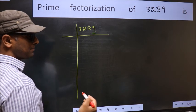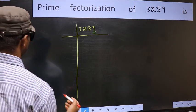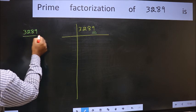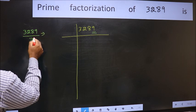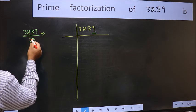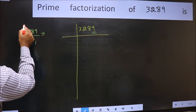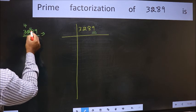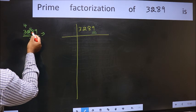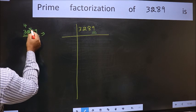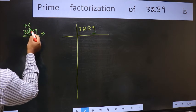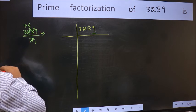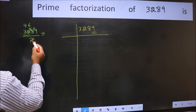Next prime number 7. Let us check divisibility by 7. A number close to 32 in the 7 table is 7 times 4, 28. 32 minus 28 is 4, carried forward 48. A number close to 48 in the 7 table is 7 times 6, 42. 48 minus 42 is 6, carried forward 69. We don't get 69 in the 7 table, so this is not divisible by 7.